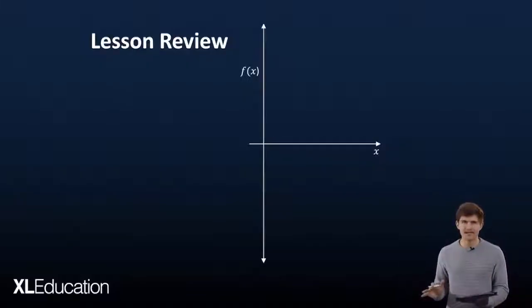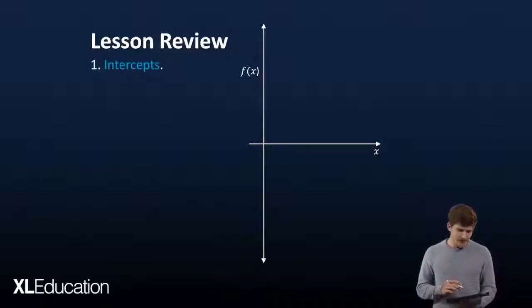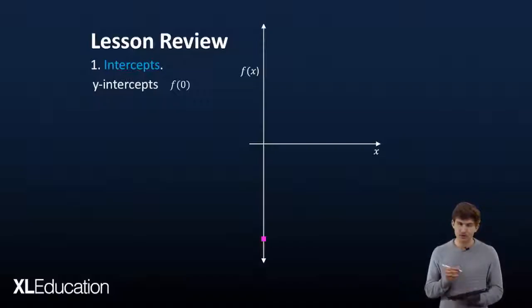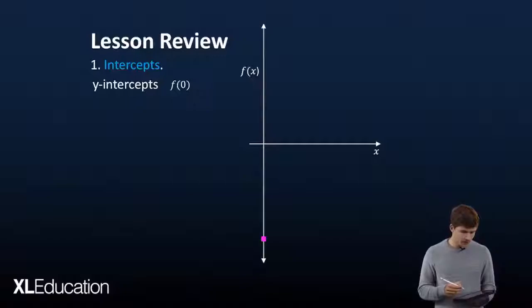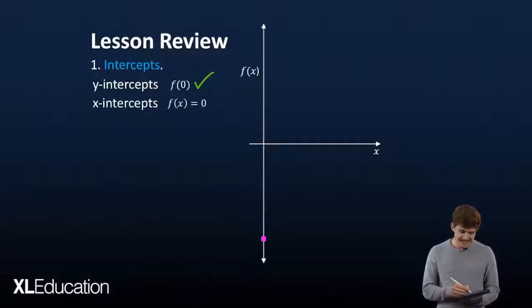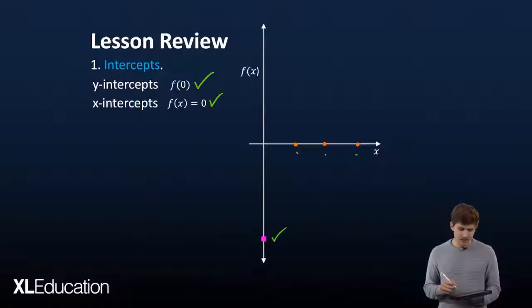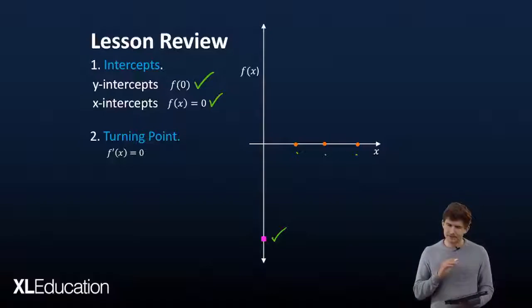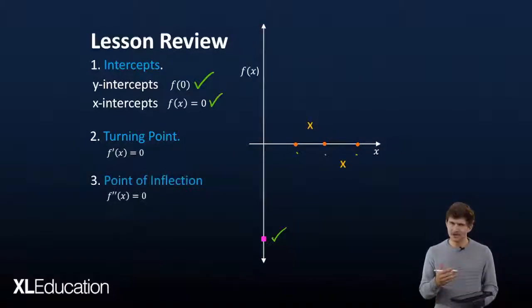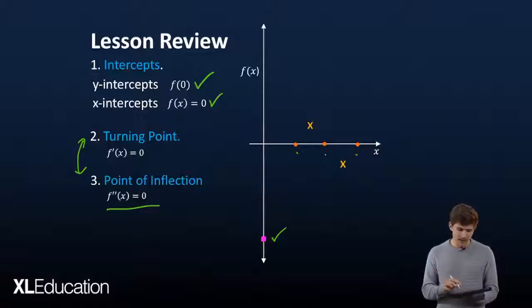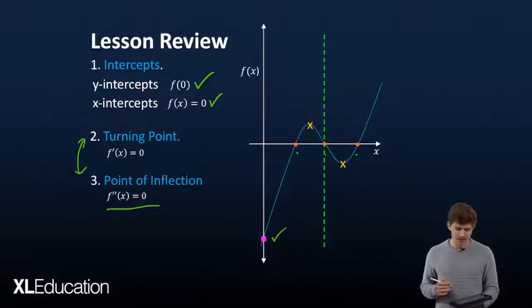In review: first, draw your axes. Then find your intercepts — the y-intercept by setting x equal to zero, and the x-intercepts by setting y equal to zero using factorization. Next, find the turning points by setting the first derivative to zero — check that value carefully. Then the point of inflection by setting the second derivative to zero and substituting back. Finally, connect the dots and your cubic function is done. Good luck with your cubic sketching and I'll see you next time.